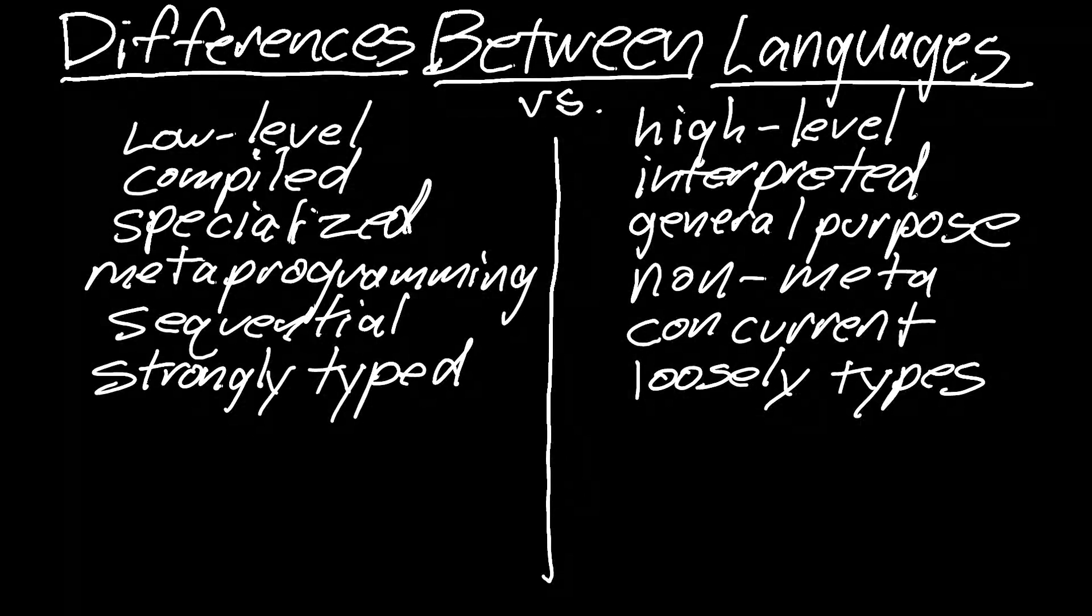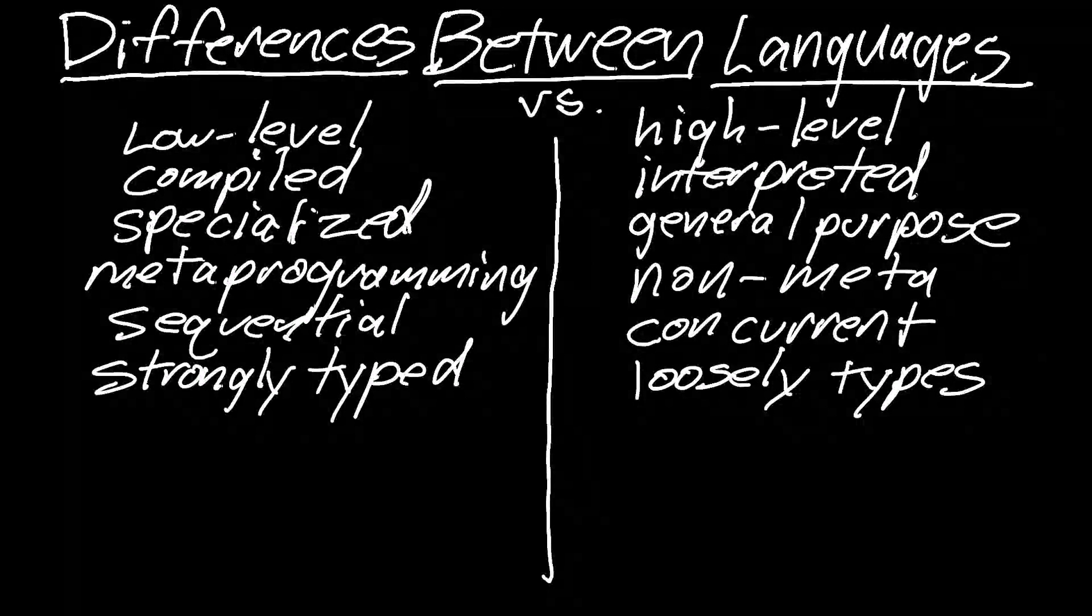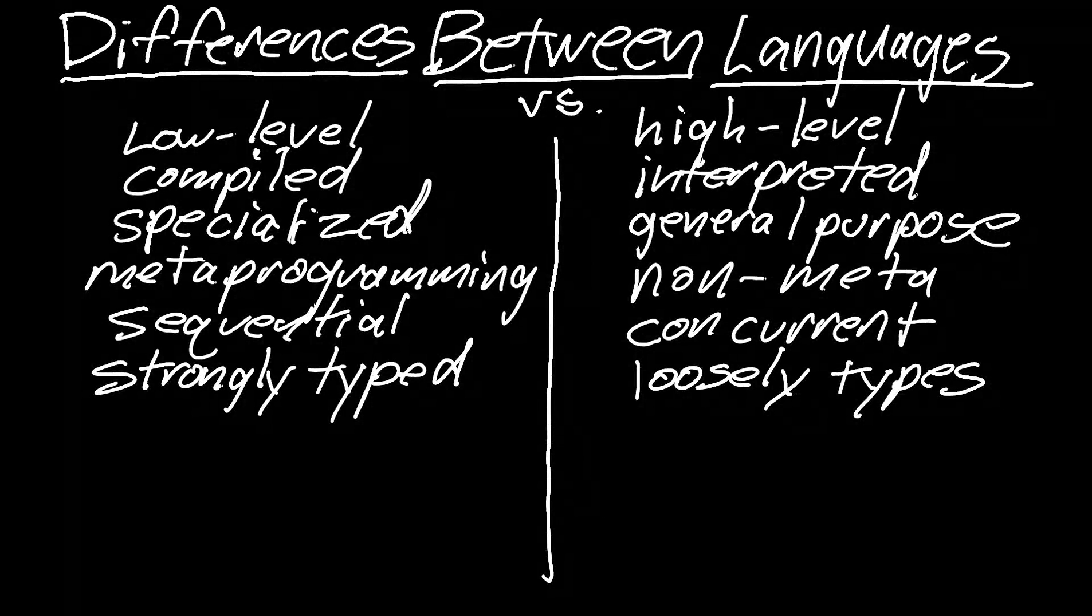And the advantage of loosely typed variables is faster development. So a program might be 500 lines of code with loosely typed variables, but a thousand lines of code with strongly typed variables because you have to declare all your variables, which can be a bottleneck.